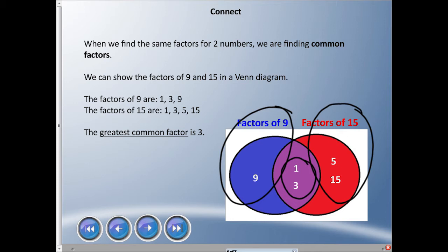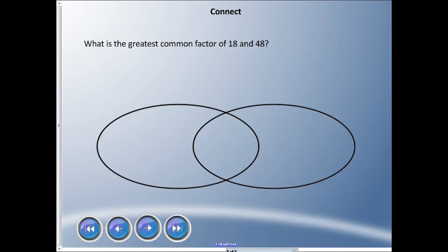However, they overlap with the 1 and 3. Now 1 is not as large as 3, so we can say the greatest common factor is 3 in this situation. What is the greatest common factor of 18 and 48? I'm gonna let you pause it here for a sec. I want you to see if you can figure out what is the greatest common factor of 18 and 48.